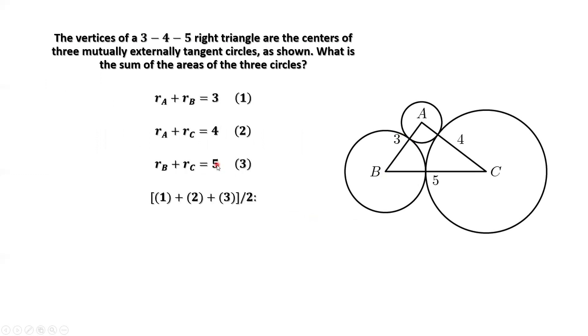If we add up both sides of the three equations, then divide by 2, we have RA plus RB plus RC equals 6.